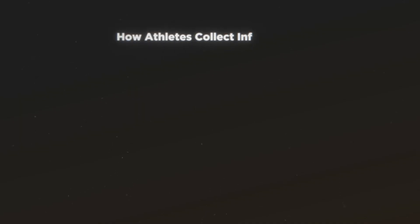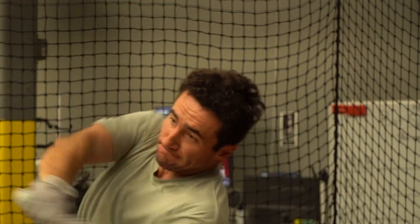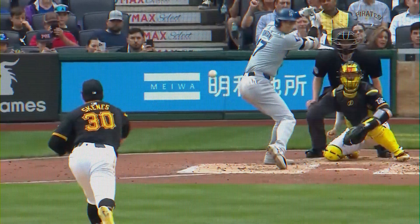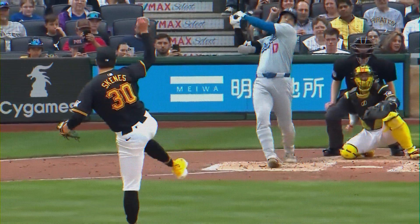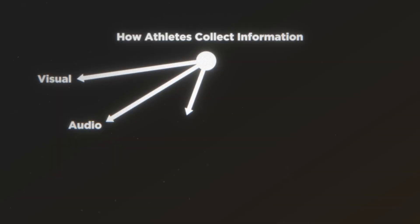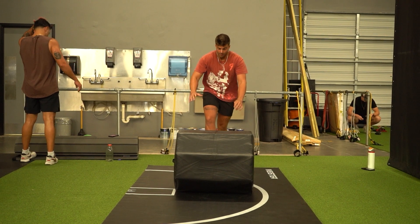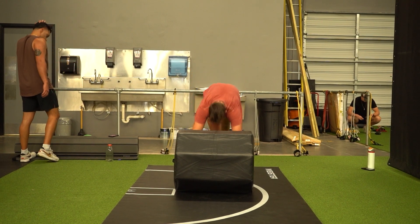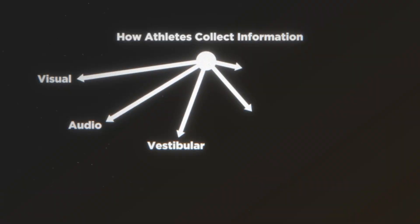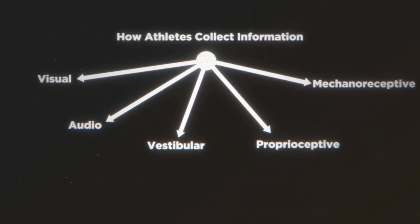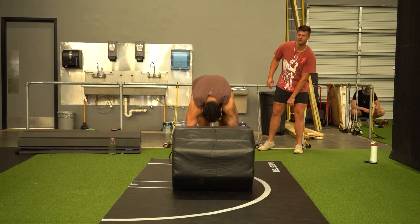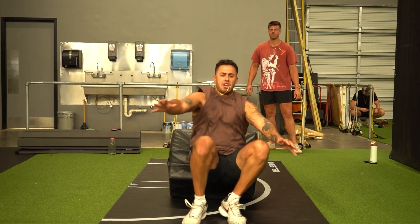It's also important to consider all of the ways that elite athletes are collecting this information. Visual information caused by visual flow of how far things are away and how fast they're getting closer. Audio information that lets a hitter know how cleanly he squared up a ball. Vestibular information that uses the water in an athlete's ears to let them know where their head is relative to the ground.